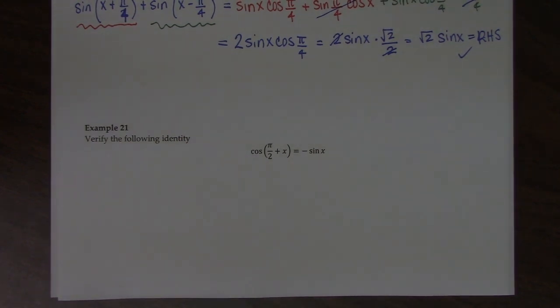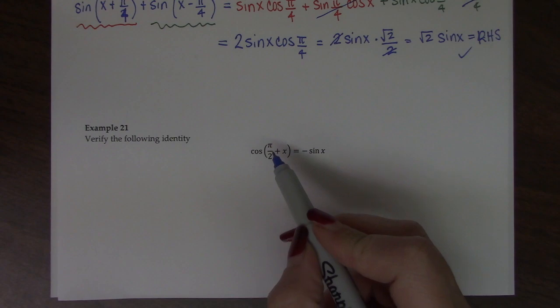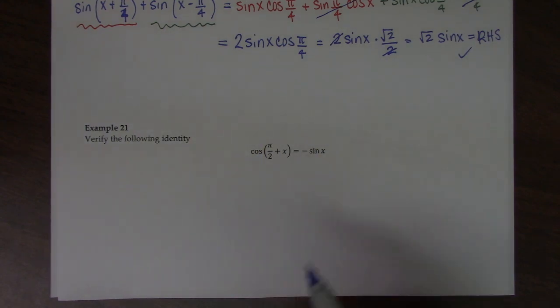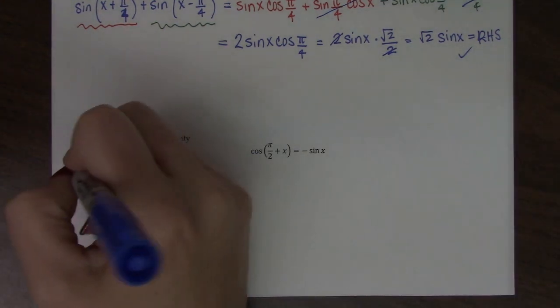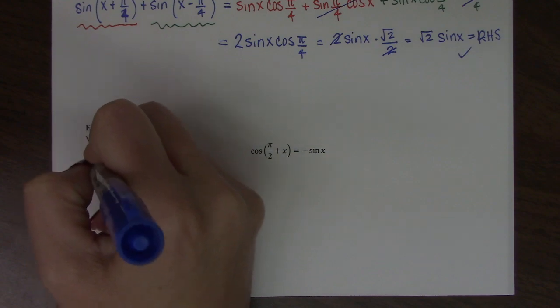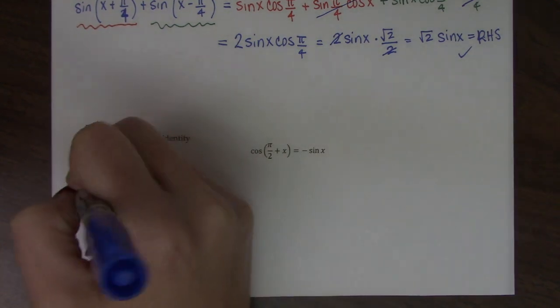For the last problem, we want to verify this identity. So once again, I'm going to expand this out and try to turn it into negative sine x. I'm going to indicate which side I'm using. It just happens to be the left hand side again.